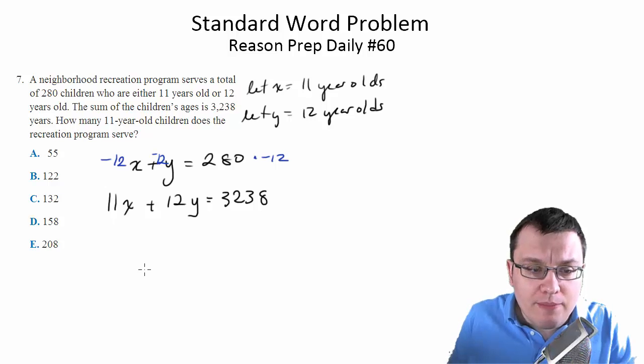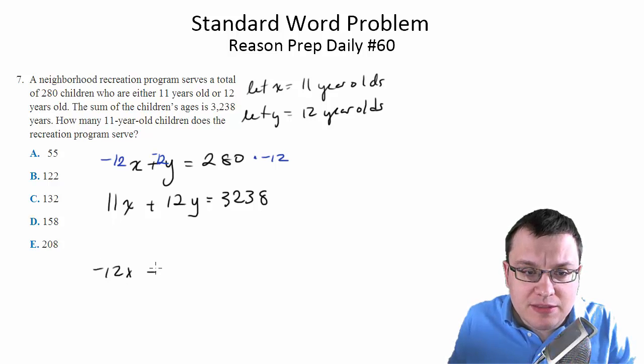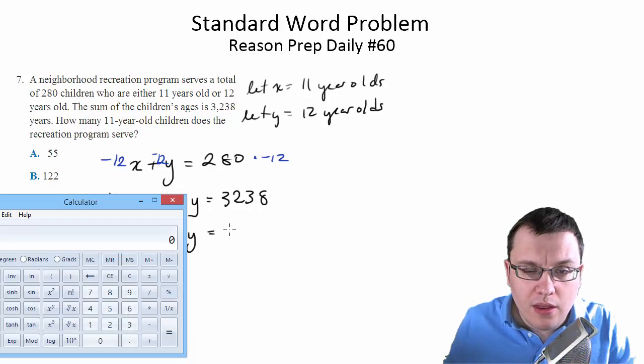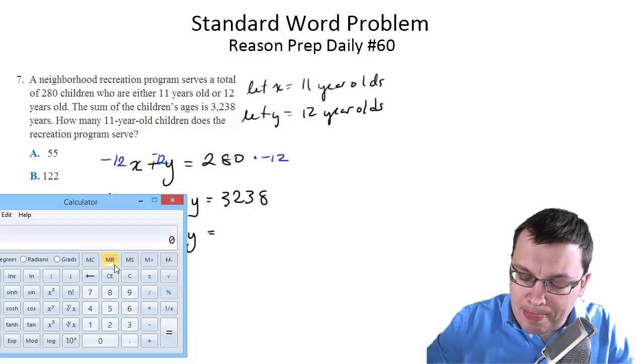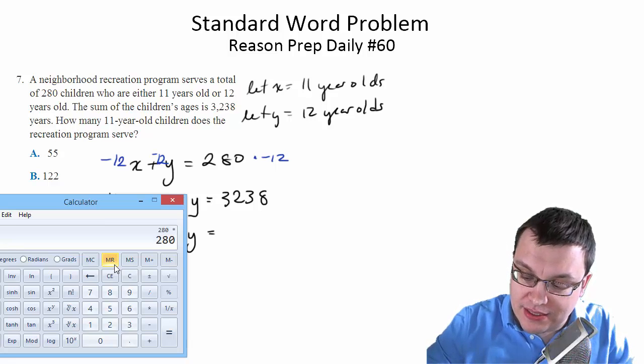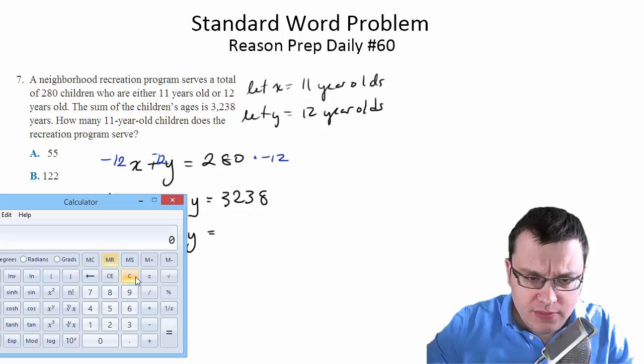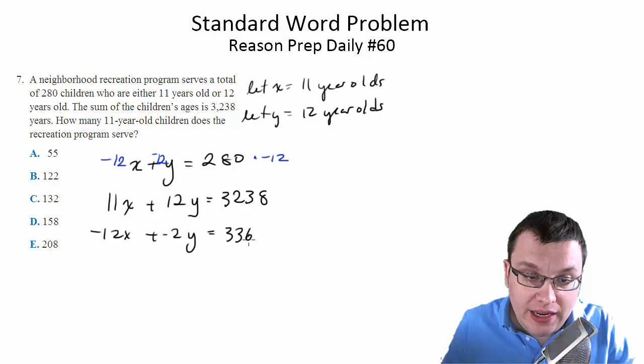And when we do that, we're going to get negative 12x plus negative 12y equals 280 times 12, 3,360, and then we know that's negative.